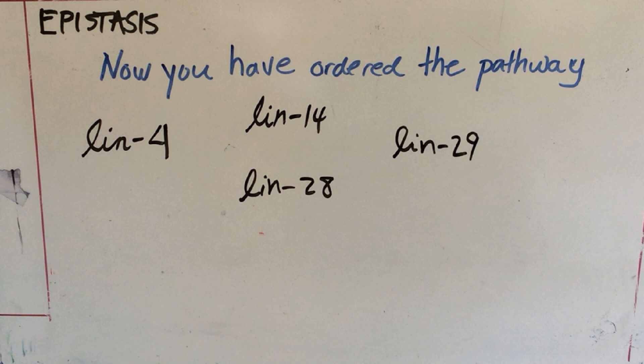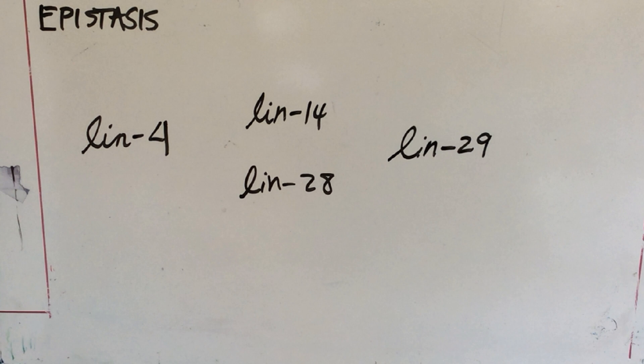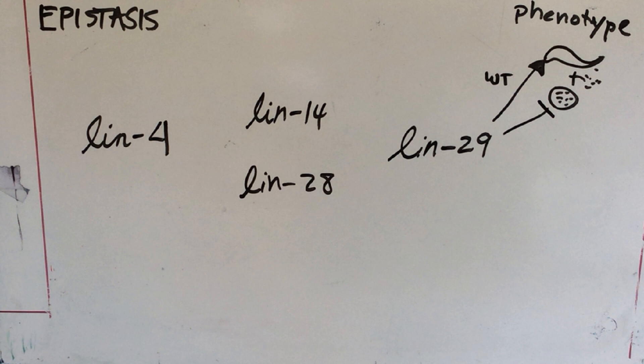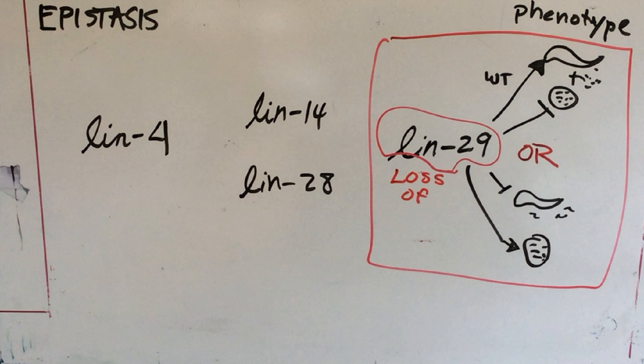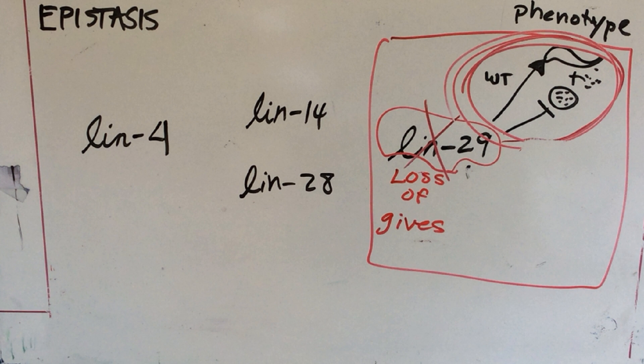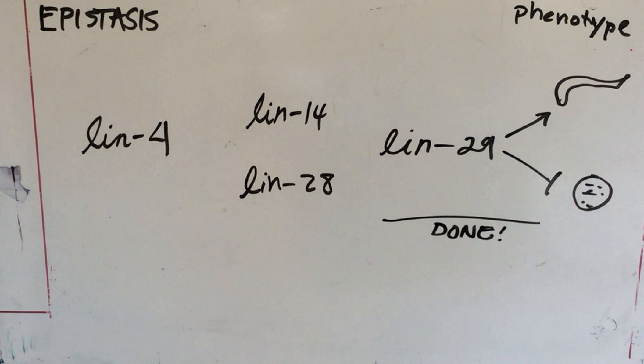And we are going to now test the relationship between them. First of all, LIN-29, when it's lost, what happens? We know that it gives a bag of worms. So the phenotype of the mutant is the top phenotype. So in the absence of LIN-29, there are no wild types, and the bag of worms is not repressed.